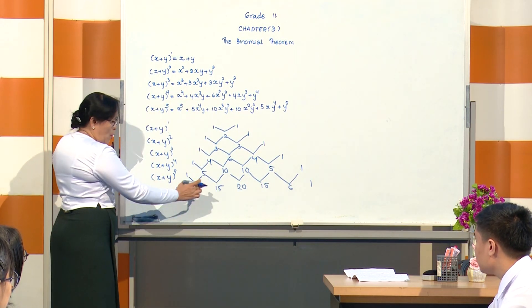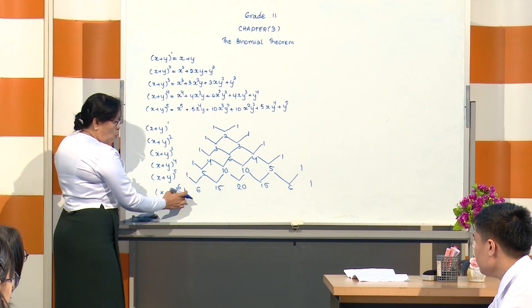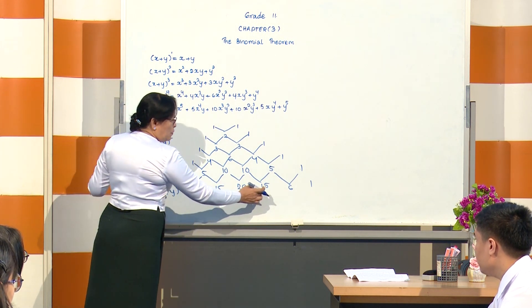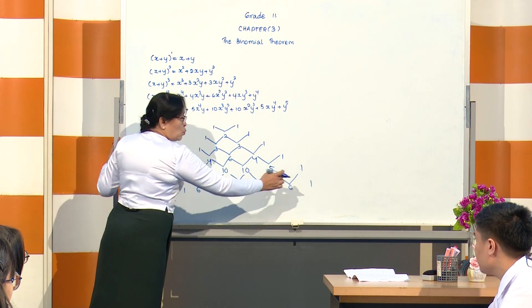Now you can see the pattern. The coefficients are 1, 6, 15, 20, 15, 6, 1.